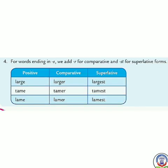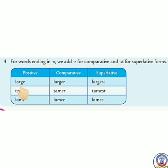Now for words ending in E, we add R for the comparative and ST for the superlative form. Large ends with the letter E, so in comparative we add R: L-A-R-G-E-R, larger. And in superlative we add ST: L-A-R-G-E-S-T, largest. Large, larger, largest.